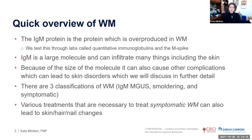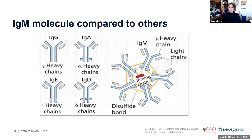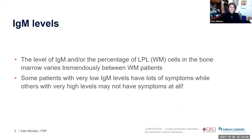Various treatments necessary to treat symptomatic WM can also cause skin, hair, and nail changes. The large size of the IgM molecule is why it causes so many issues. IgM levels don't necessarily tell you how symptomatic a patient will be — patients with high IgM can have few symptoms, and vice versa. We don't treat the number; we treat the symptoms.